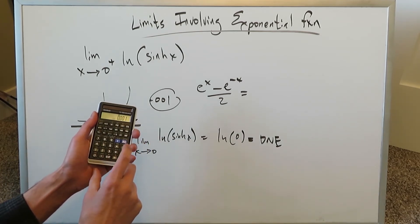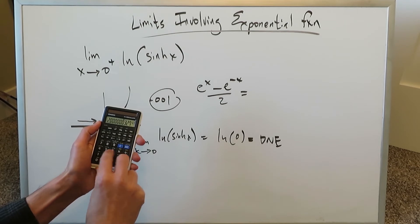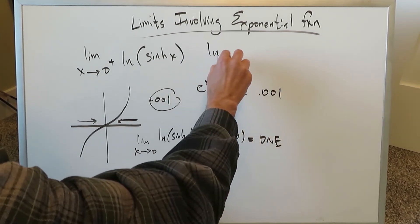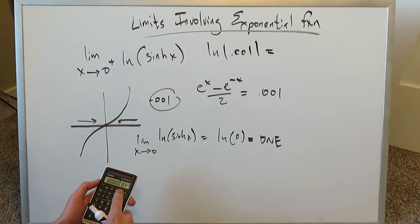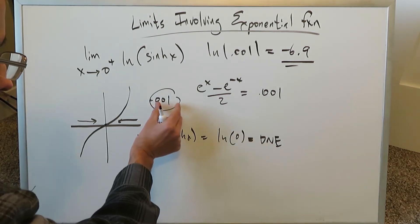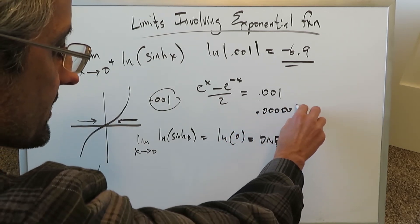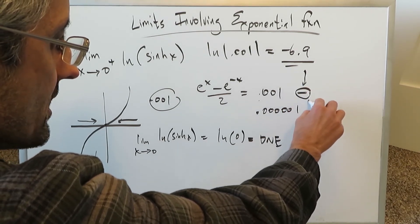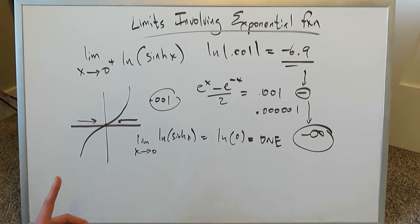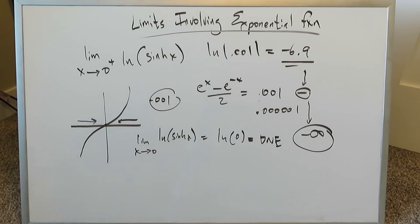When I put 0.001 in place of x in the hyperbolic sine definition, I get approximately 0.001. Then I evaluate ln(0.001) and get about minus 6.9. As I put more zeros — making the value closer to 0 — this output becomes more and more negative, growing toward negative infinity. So the limit as x approaches 0 from the right of ln(sinh(x)) approaches minus infinity.